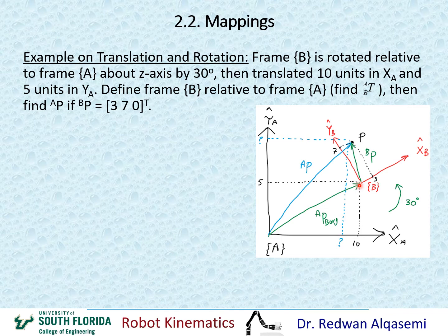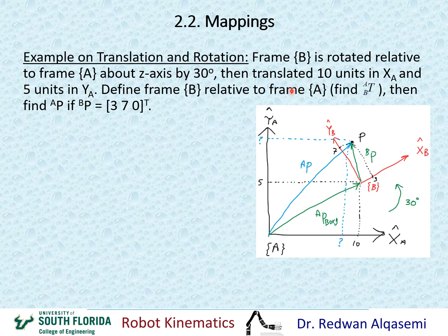The way I drew this is based on the given information. The origin of frame B relative to frame A is 10 units in XA, as seen here, and 5 units in YA as given — so that's where I placed the origin. The rotation was about the Z axis by 30 degrees. Using the right-hand rule, with my thumb along ZA and going 30 degrees, XB and YB are 30 degrees from XA and YA. That results in frame B as shown in red.